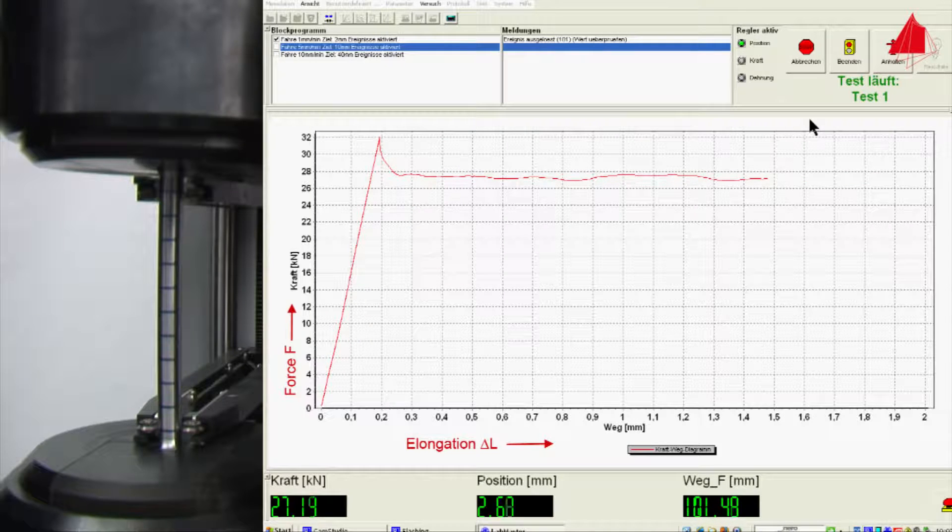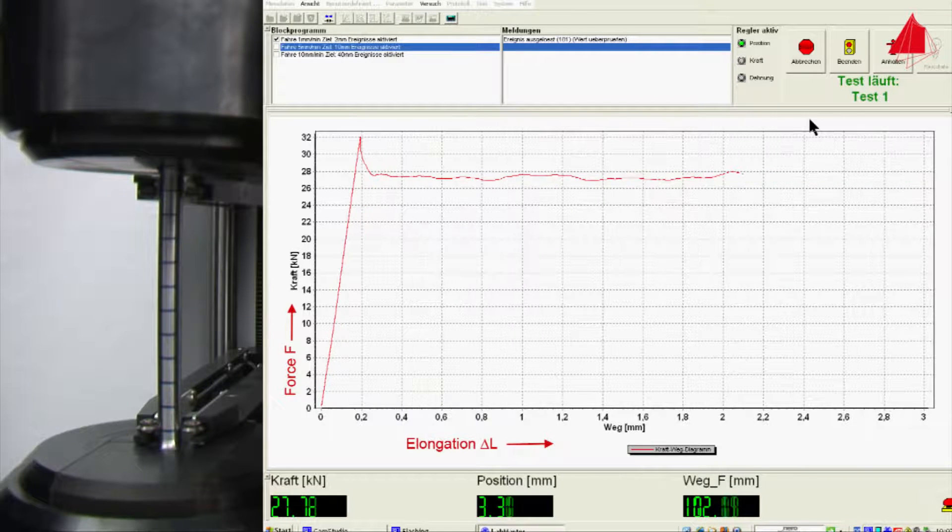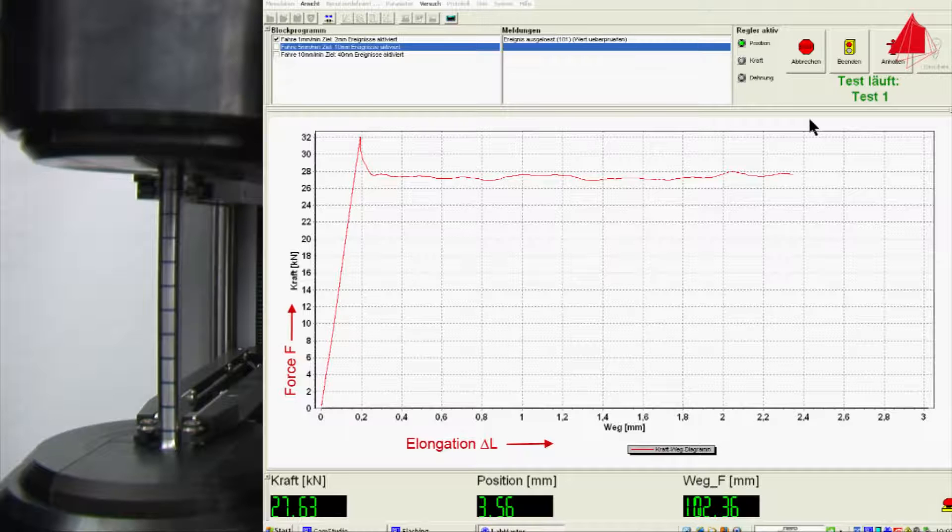In the next stage of the tensile test, an almost constant force level with slight fluctuations occurs. This phenomenon is called the Lüders effect.